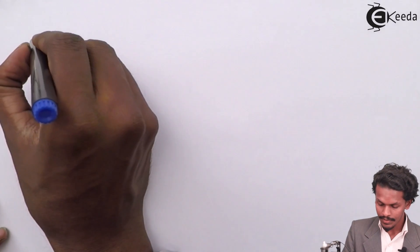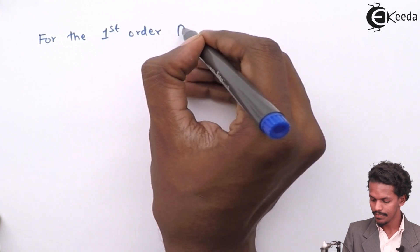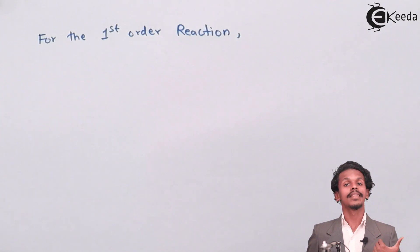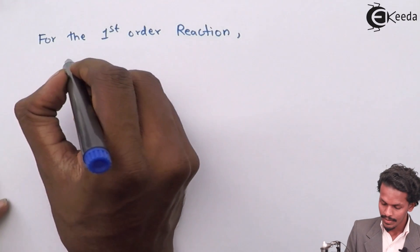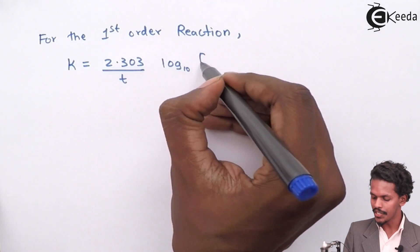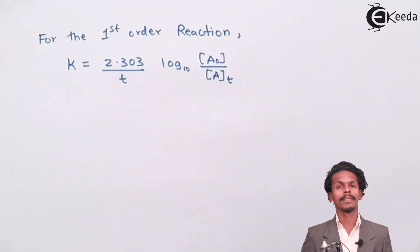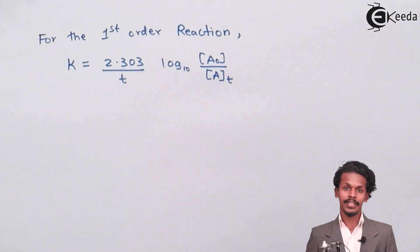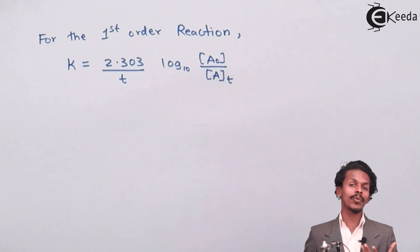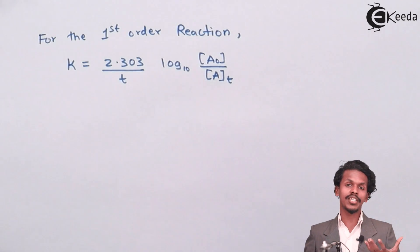As we know, for the first order reaction, the rate constant can be expressed as k = 2.303 / t × log base 10 of [A₀] / [A]. Half life is denoted by t½, where t is the time. According to half life, it is the time required to convert the initial concentration to its half.